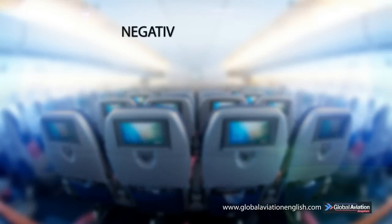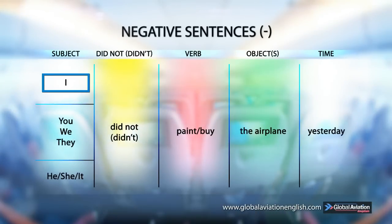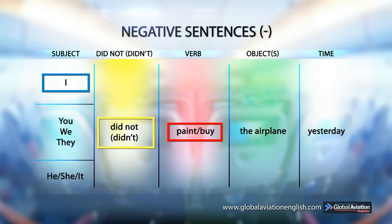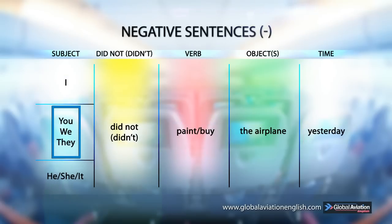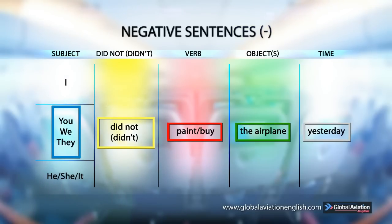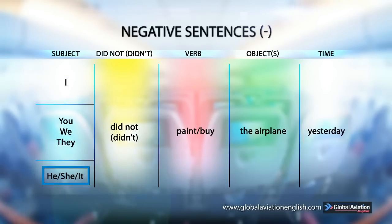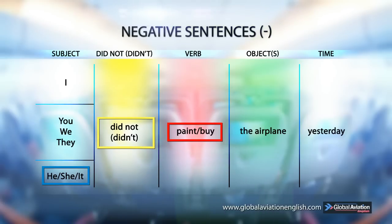Negative sentences. I didn't paint / buy an airplane yesterday. You, we, they didn't paint / buy an airplane yesterday. He, she, it didn't paint / buy an airplane yesterday.